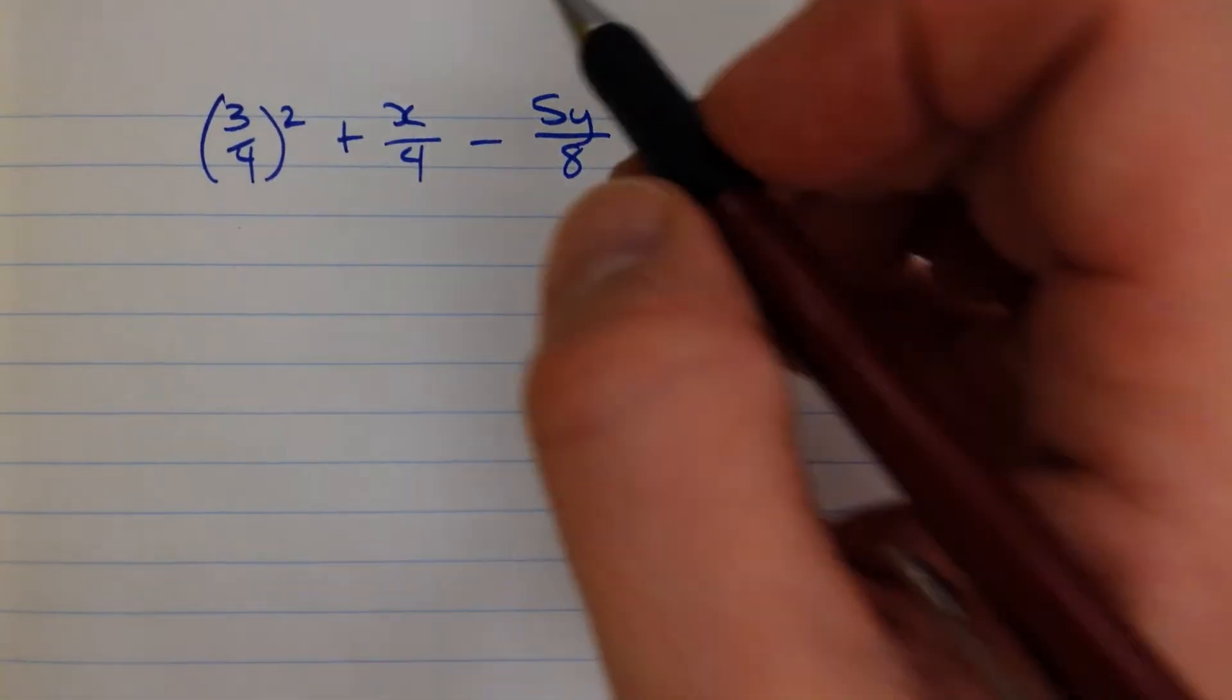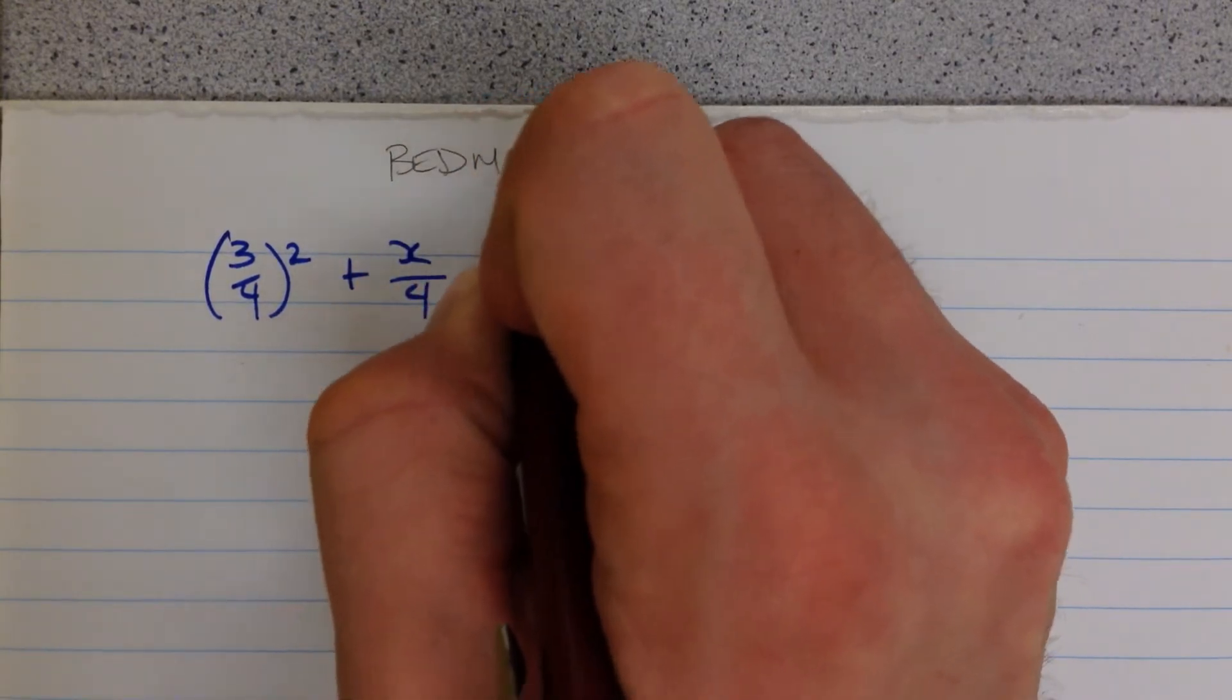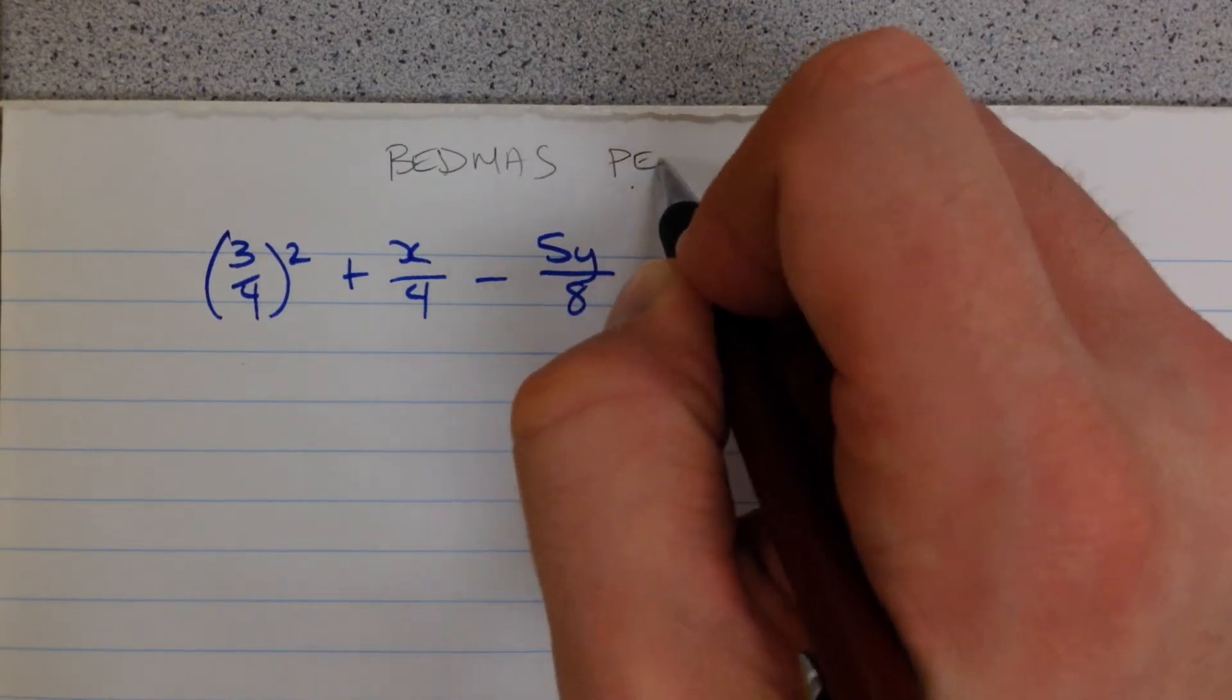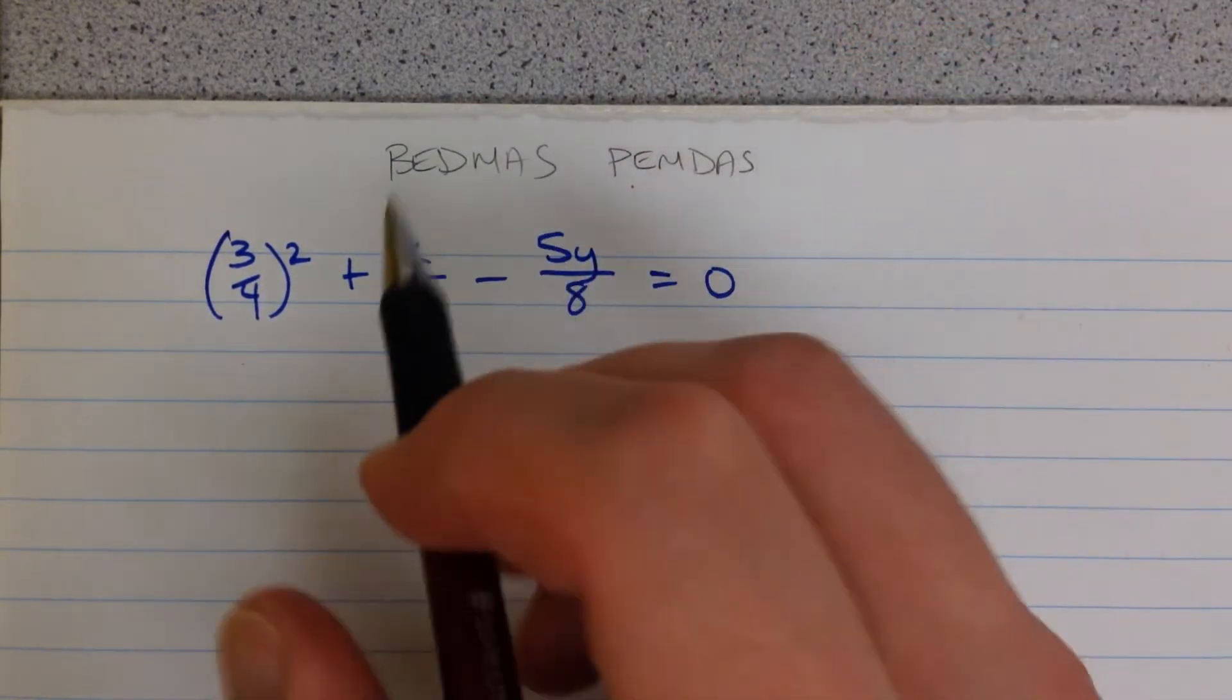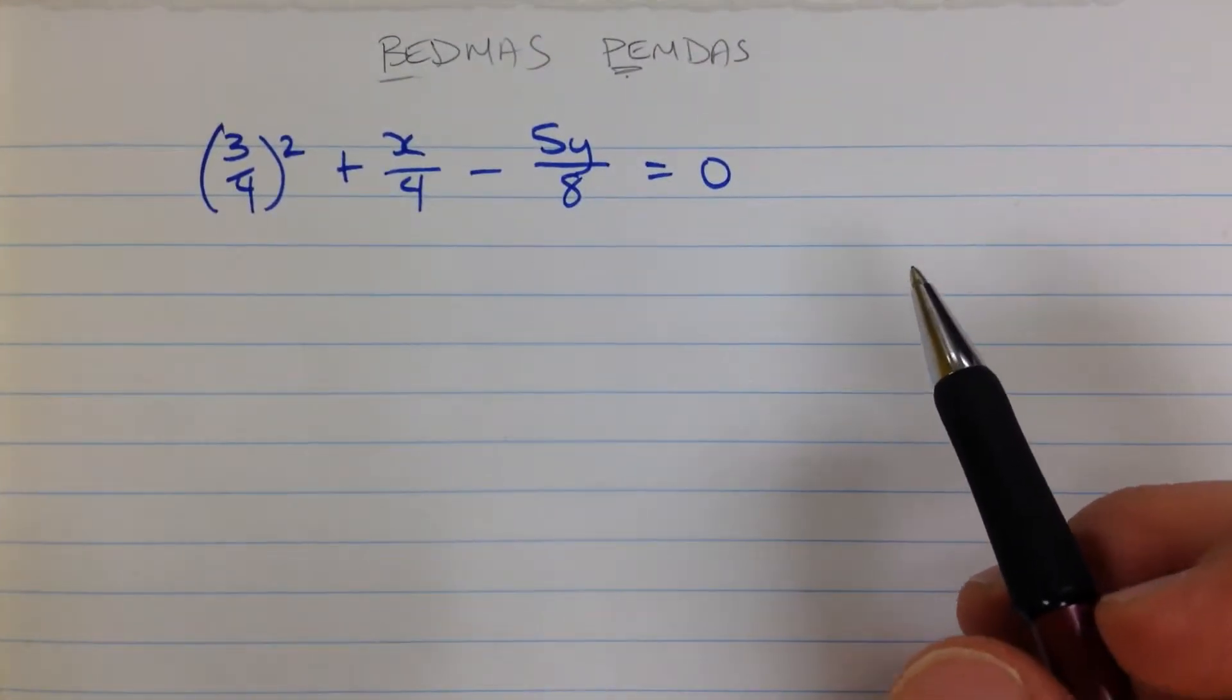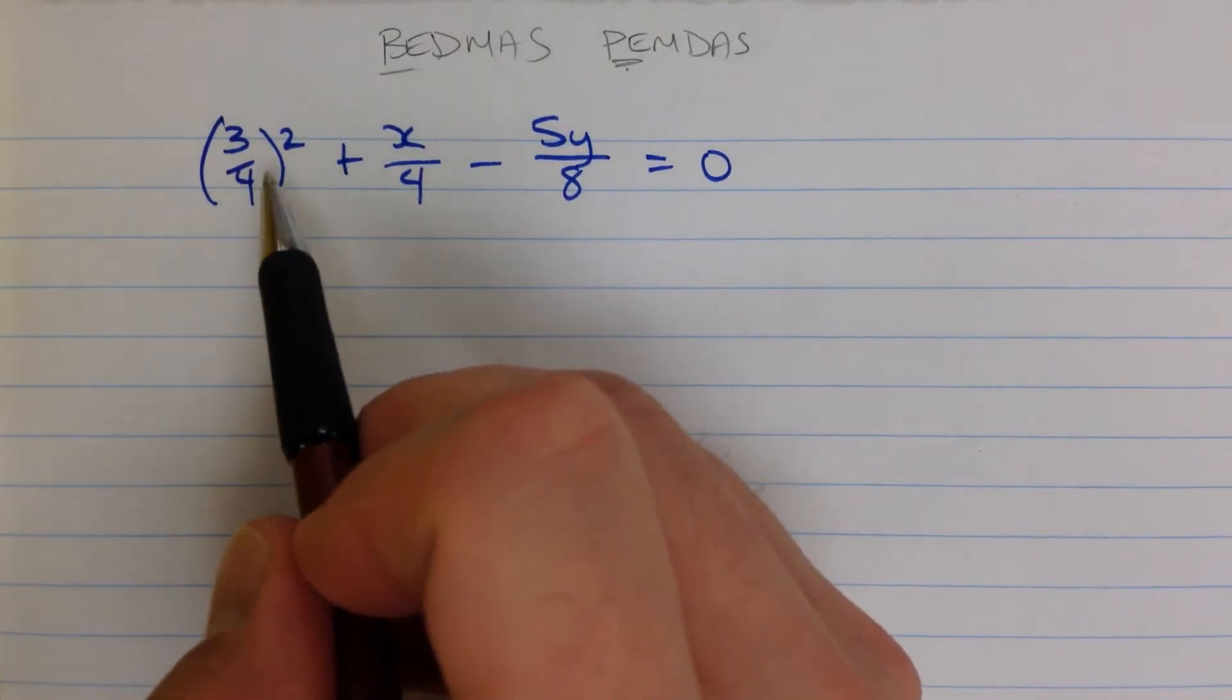Okay, so you may be familiar with the phrase or the word, acronym, BEDMAS, or maybe you use PEMDAS. In both of these cases, you look at brackets or parentheses first and then exponents, so those are the things that you resolve first or that you compute first or calculate.